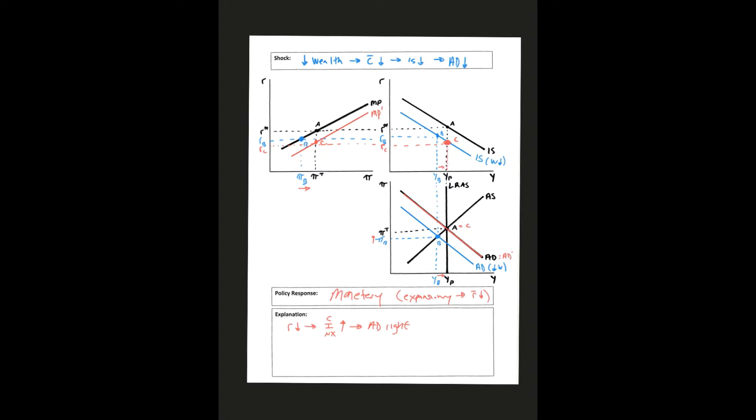So in summary, we were in a recession at point B. But what we're doing is we're moving aggregate demand back to the right by decreasing interest rates through monetary policy.